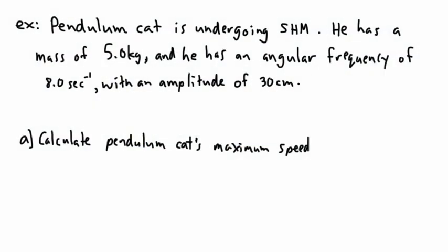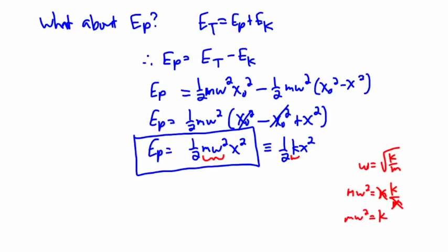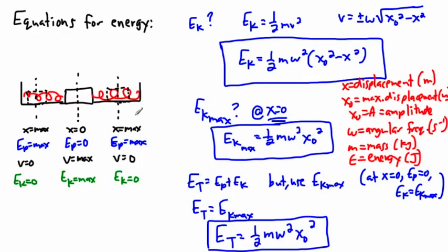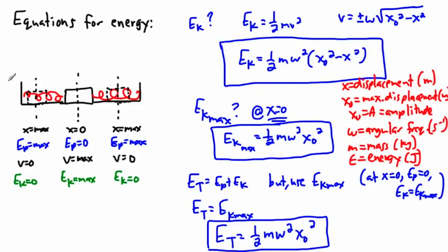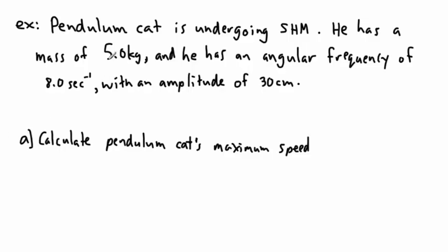Now let's put all this together. We've actually calculated and figured out what the equations are for potential energy of simple harmonic motion, the kinetic energy, maximum kinetic energy, the total energy, and even the velocity. We used a lot of these — they stemmed from looking at a spring and figuring out position, velocity, and therefore potential and kinetic energies. Let's put it all together in an example.